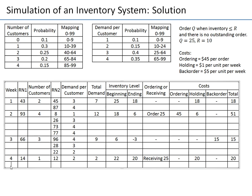In week five, random number 3 maps to 0 customers. With no customers, there is no demand, so total demand is 0. Starting inventory remains 20, and ending inventory is still 20. We do not order since 20 is more than 10. There's no ordering cost, holding cost is $20, and no back order cost. Total cost for week five is $20.